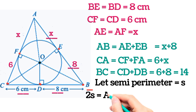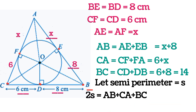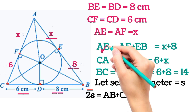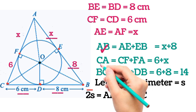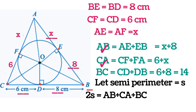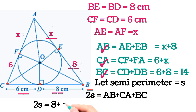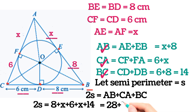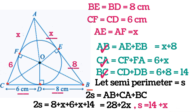Now let the semi-perimeter be s, so 2s = AB + CA + BC. Substituting: AB = x + 8, CA = 6 + x, BC = 14, giving 2s = (x + 8) + (6 + x) + 14 = 28 + 2x. Therefore s = 14 + x.